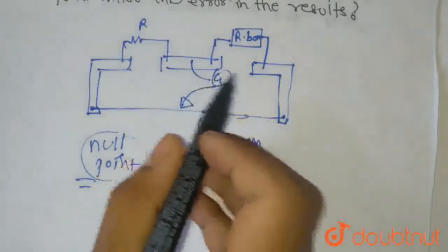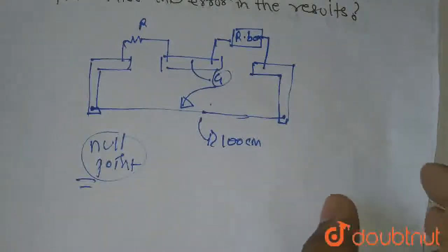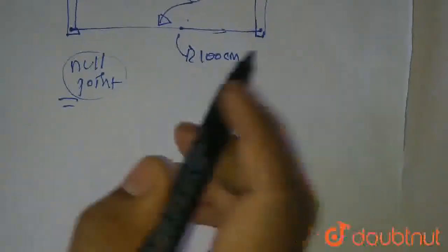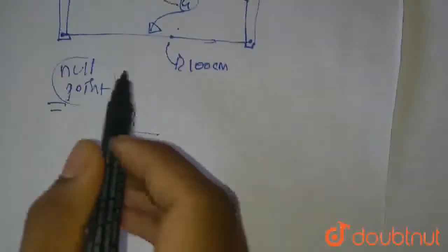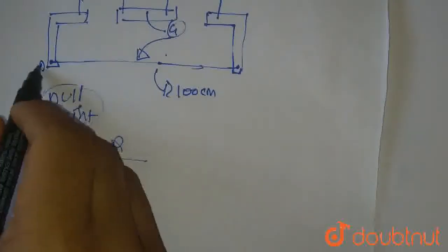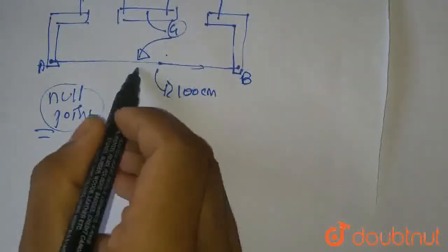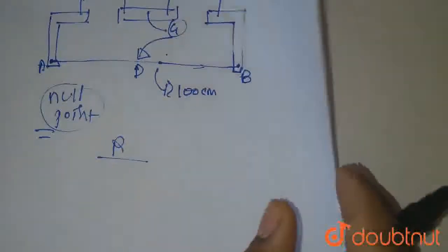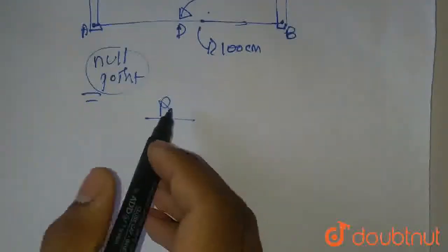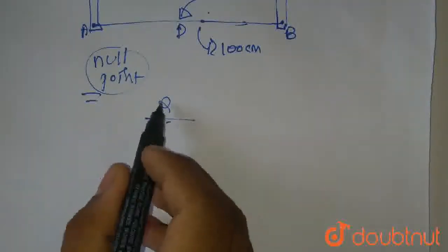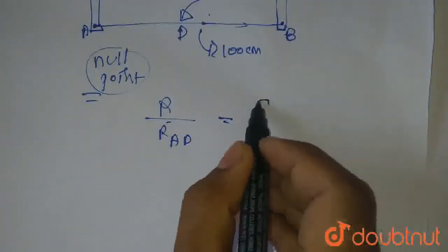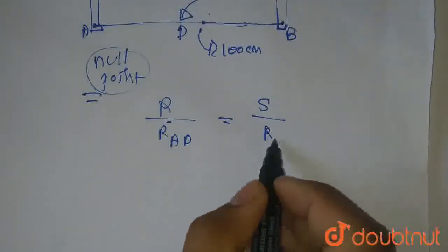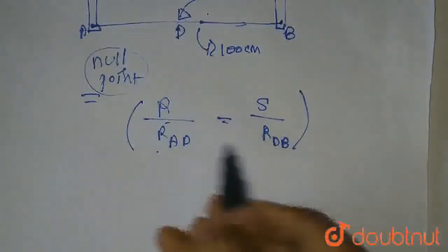When we know that the galvanometer has no current flow, according to the metre bridge principle, we can see the resistance R. Suppose this point has a name A and this has a name D. So our resistance R by resistance across AD should be equal to S by resistance across DB. This is our metre bridge principle.